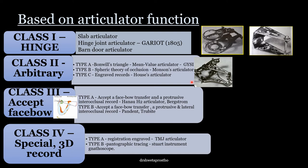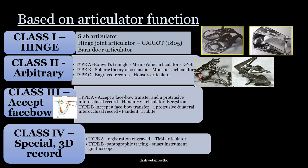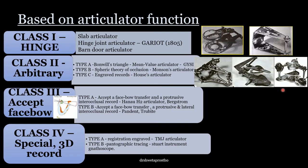This question is often asked by the examiner: classify the articulator you are using — so you should be able to answer. Class 2 Type B is based on the spherical theory of occlusion; the example is Monson's articulator, which is based on spherical theory. Type C is based on engraved records — records made by the patient — and the example is the house articulator. In this, the movements are done by the patient and these records are transferred to the articulator. Class 2 articulators permit both horizontal and vertical movement but are based on average values.